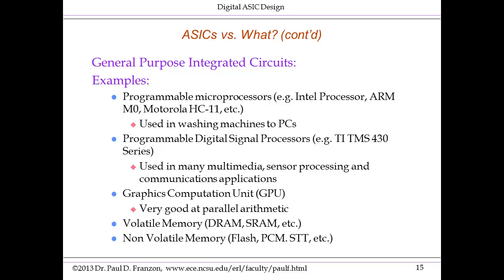Classic examples include the Intel processor range and the ARM processor range commonly found in mobile devices. There is also a subclass of processors called digital signal processors. These are still programmed devices, but the features in the instruction set architecture are more tuned towards digital signal processing functions such as those needed in multimedia.